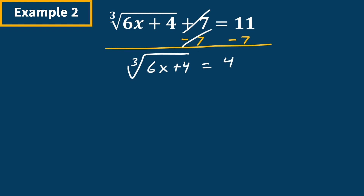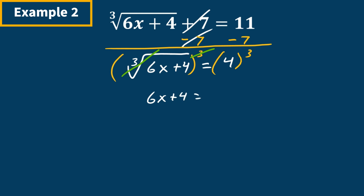From here we want to get rid of that radical sign. Whenever you see the number 3 on the inside, that means we're going to raise both sides to the third power. This radical sign cancels with the third power, and what we're left with on the inside is 6x plus 4 is equal to 4 cubed, which is 64.